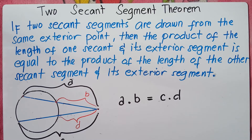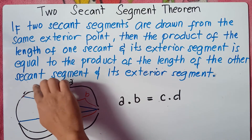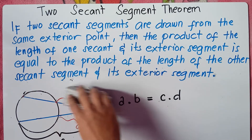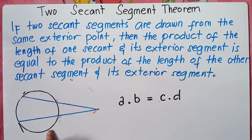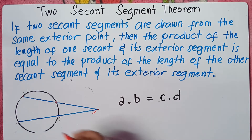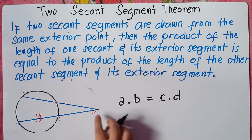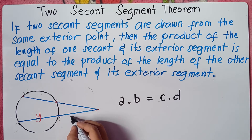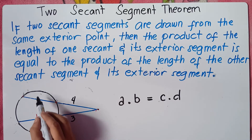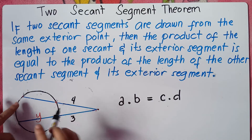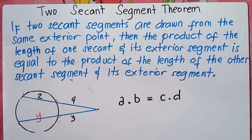Now for you to really understand this, let's try an example. What if we say you are told to find Y. The length of the exterior of the second secant is 3, the length of the exterior of the first secant is 4, and the length inside the circle of the first secant is 2. You are told to find Y.